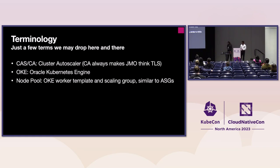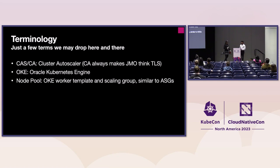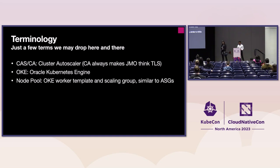A little terminology: Cluster Autoscaler is typically called the CA. I call it the CAS because sometimes when I hear people say 'I'm going to go rotate a CA,' I have a minor cardiac infarction. So I just call it the CAS — it makes explaining stuff so much easier. OKE, if I drop that, that's our version of our Kubernetes environment, same thing as AKS, EKS, GKE. And Node Pools are very similar to AWS ASGs — it's a way for us to templatize the different types of worker nodes in our cluster and facilitate scaling up and down.